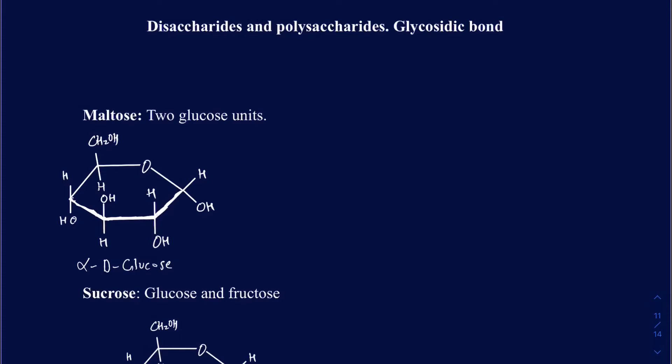In this video, we're going to be talking about some of the common disaccharides and polysaccharides, also called carbohydrates, and we're going to be talking about how to recognize what type of glycosidic bonds they entail. Let's take a few examples here.